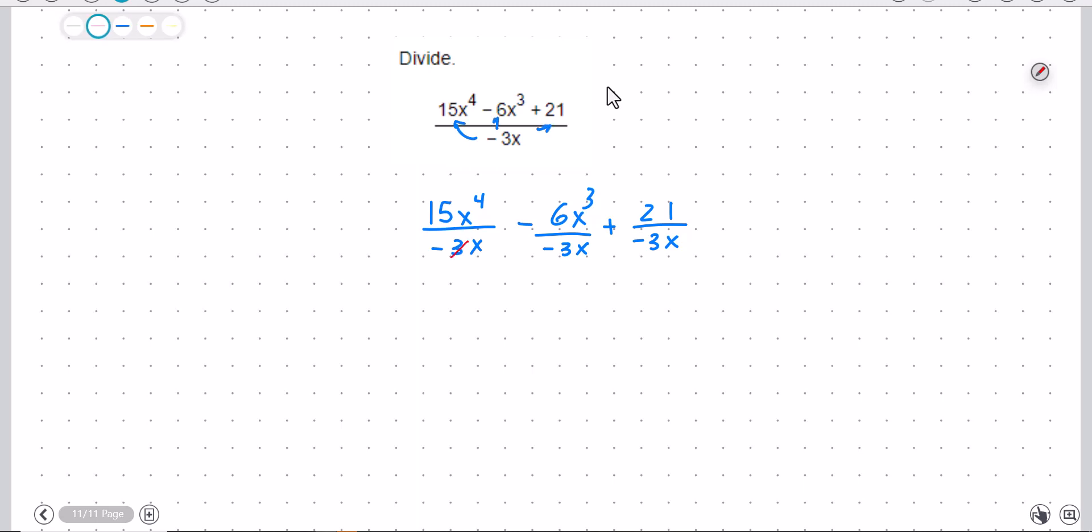Now I can see 3 will evenly go into 15 five times, and I can get rid of one of the x's. So that's going to leave negative, don't lose my negative sign, 5x to the third.